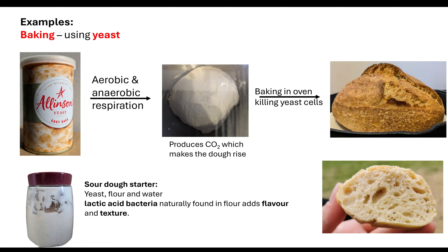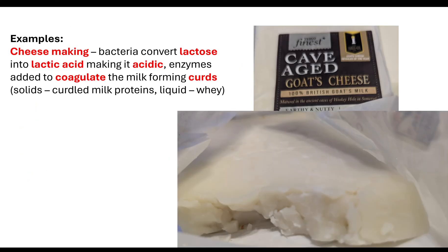Whenever they give you a question, remember it's about linking it together with other topic areas. Cheese making is another example — bacteria convert lactose, a disaccharide, into lactic acid, making it acidic and adding flavour. Enzymes added cause coagulation, and the milk forms curds which are solid protein. Those proteins are produced by the organism the milk comes from — in this example, goat's cheese, though it could be cow's milk.